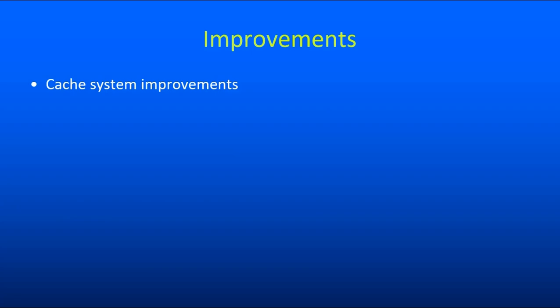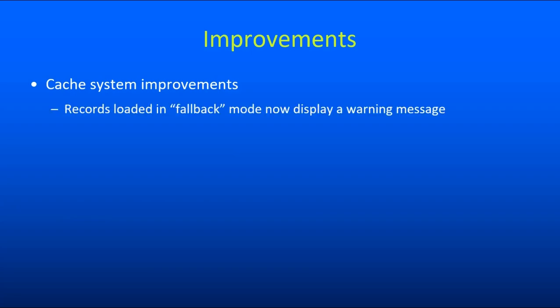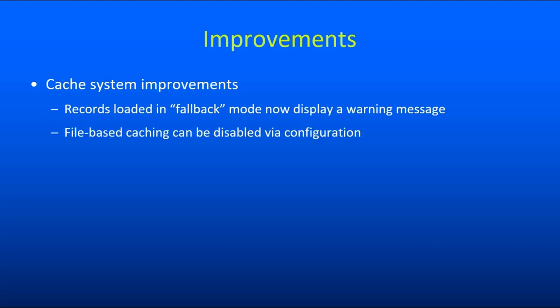There have also been some improvements to the cache system. When you have record caching turned on in fallback mode, it can be set up to display a warning that you're viewing a cached version of a record, which might be helpful for providing context to users. Also, the entire file-based caching system can now be turned off through configuration if you want to be sure nothing is being cached — this could be useful, for example, when troubleshooting things.